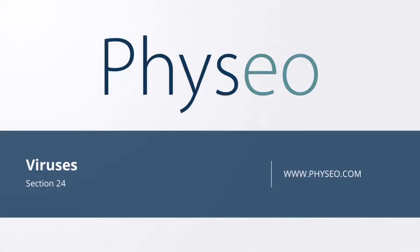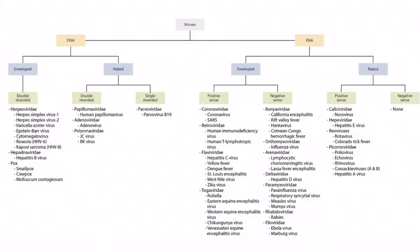Welcome to Section 24 of Viruses. This is our virus overview figure, and in this video we'll be discussing Rift Valley Fever and Crimean-Congo Hemorrhagic Fever. These are both bunya viruses, which you can see right here.